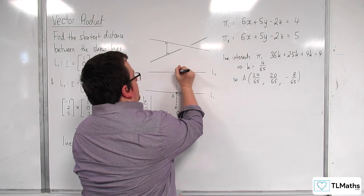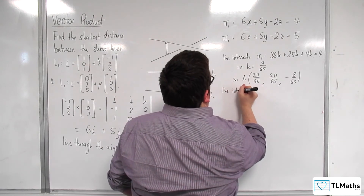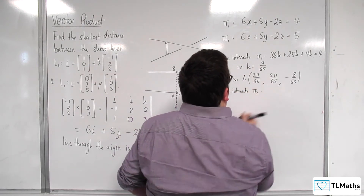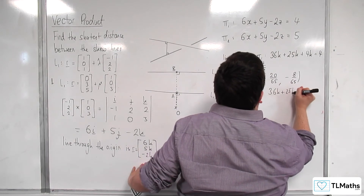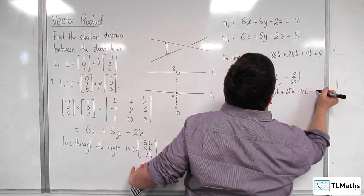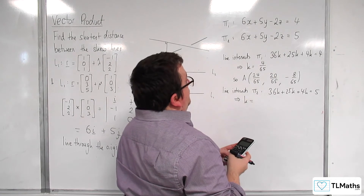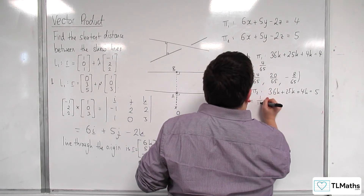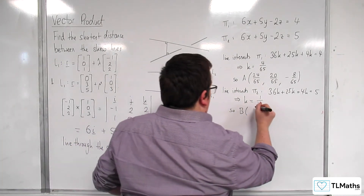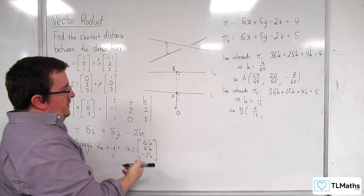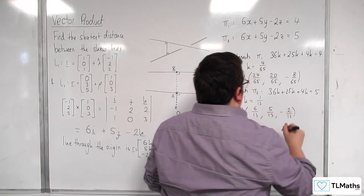Now doing the same to find point B where the line intersects plane 2: 36k + 25k + 4k = 5, so 65k = 5, giving k = 1/13. So point B has coordinates (6/13, 5/13, −2/13).